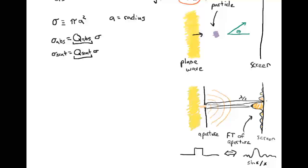Because we're measuring light, we're measuring power, not just the electric field. What we actually see on the screen is the square of this Fourier transform — the square of sin(x)/x. That's our familiar slit experiment.